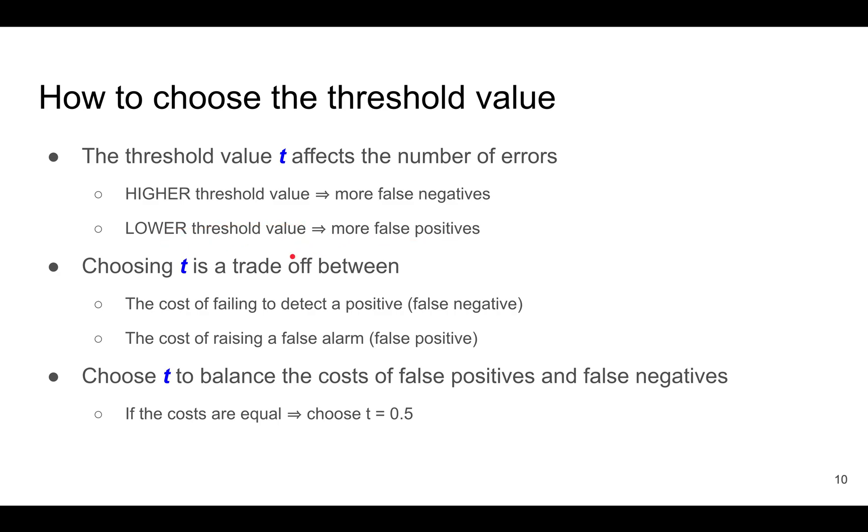When you choose t, you need to trade off between the cost of a false negative versus the cost of a false positive. If for some reason you expect that the cost of false positives and false negatives is kind of equal, then you might choose t equals 0.5.